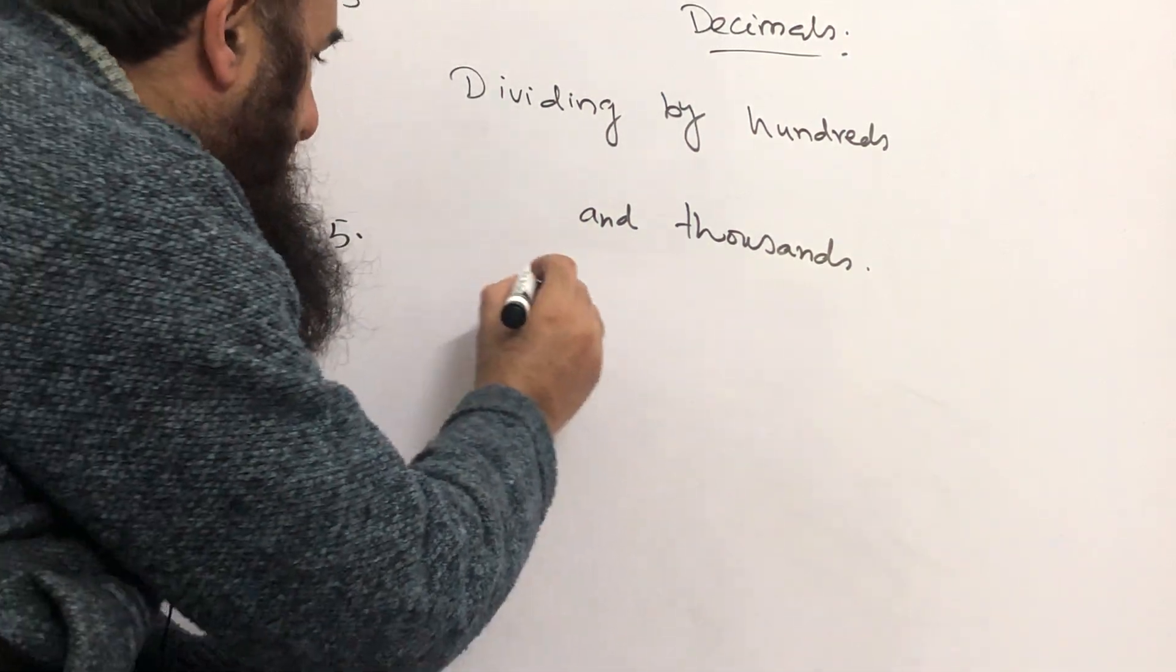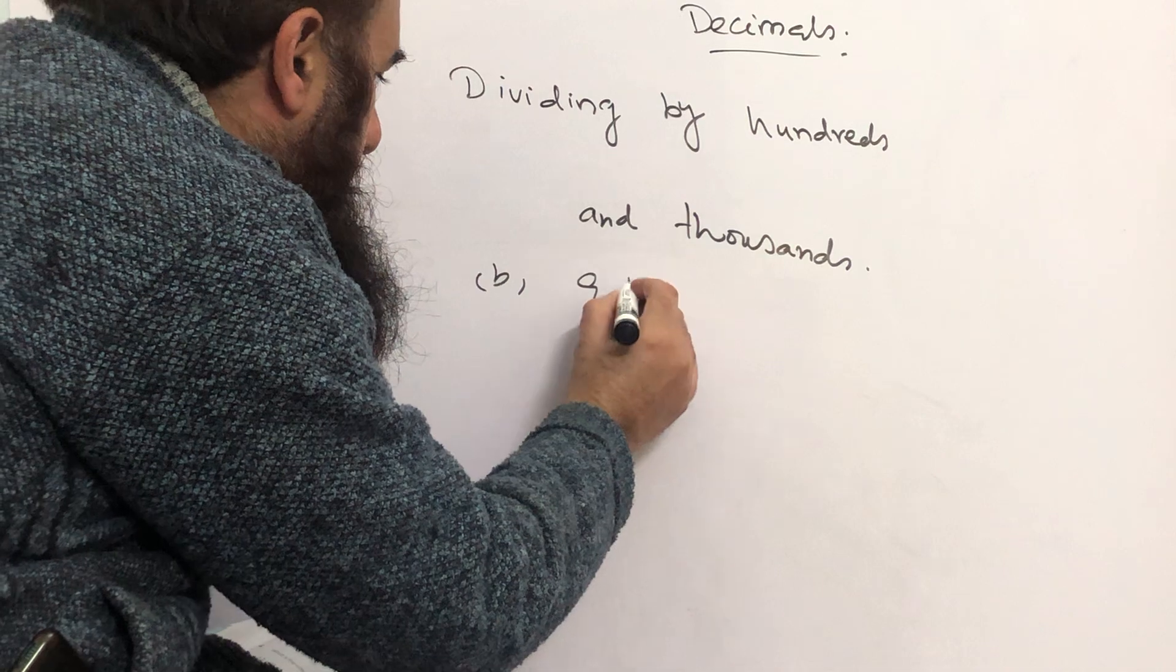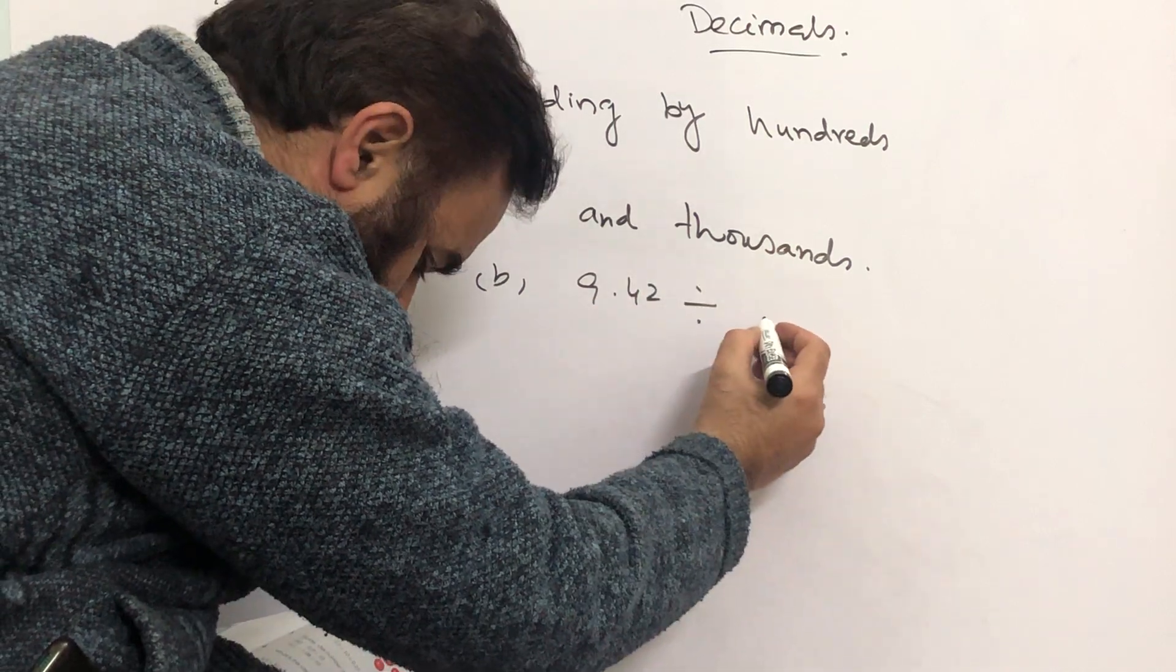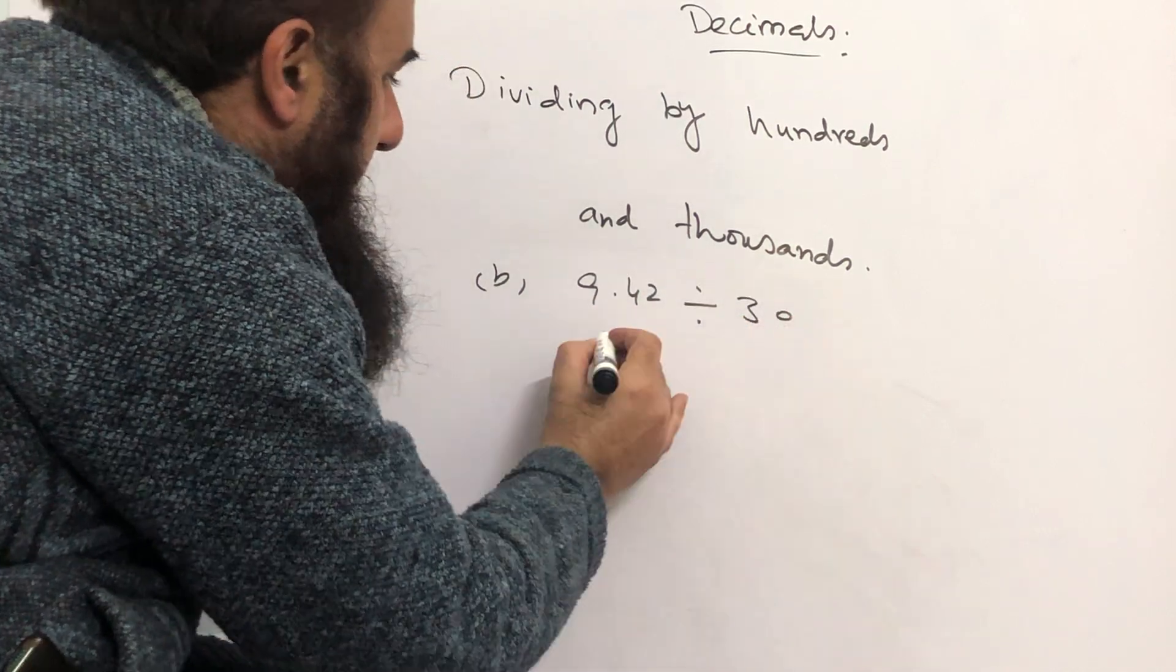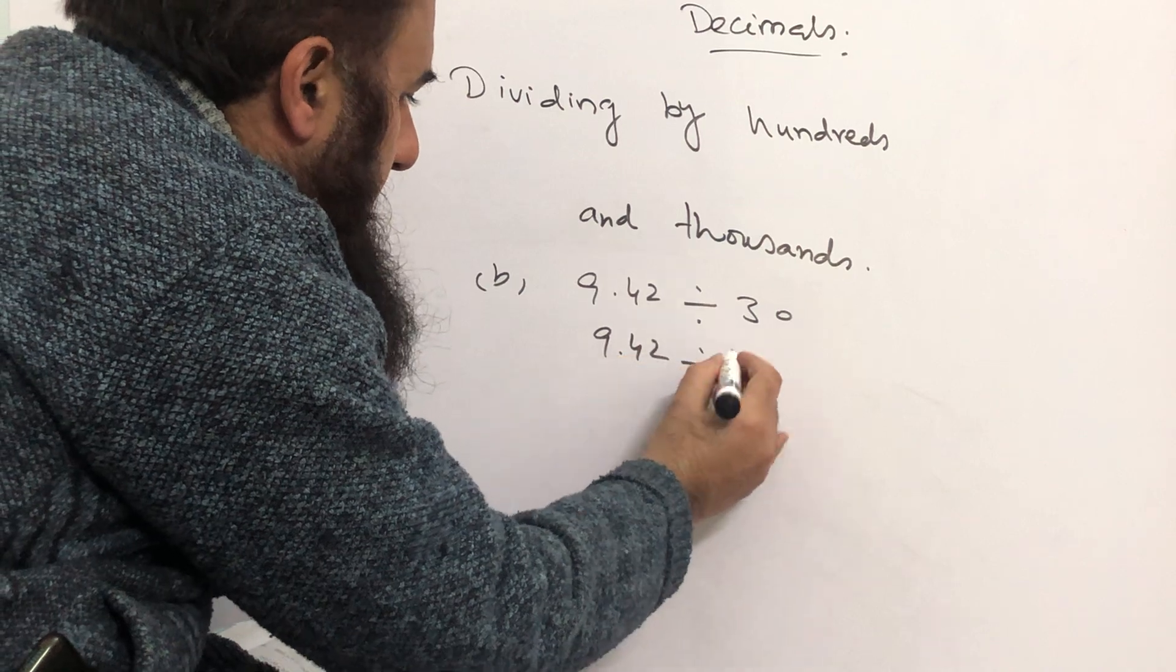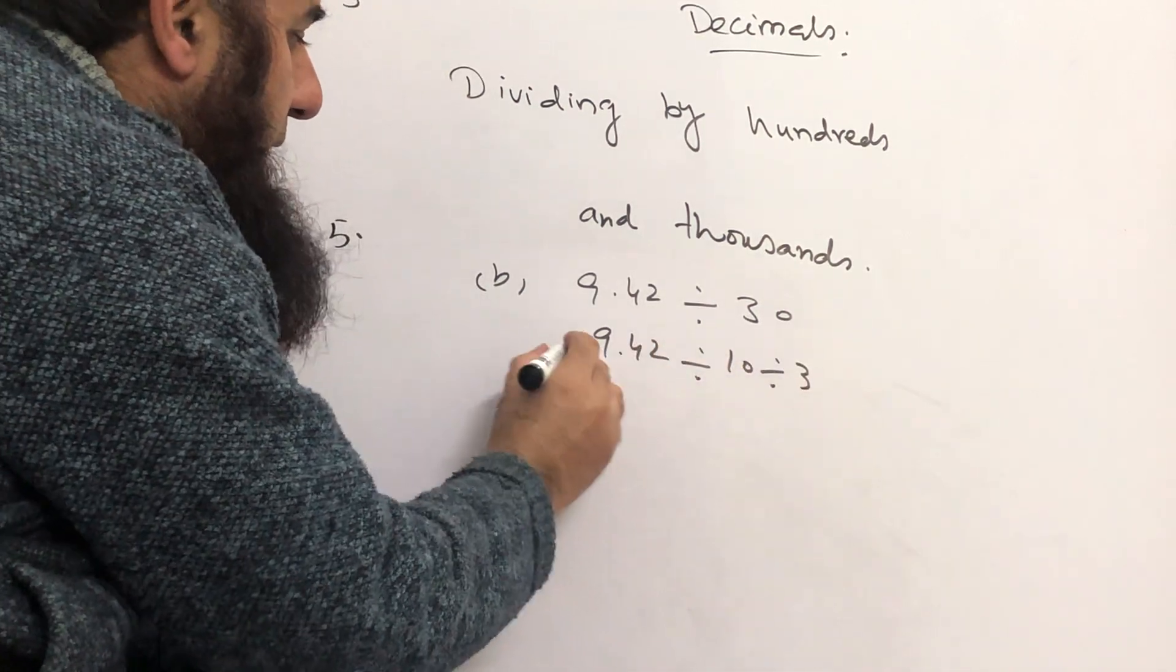Part B is 9.42 divided by 30. 30 will break up into 10 and 3. We can write it like this.